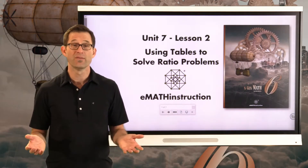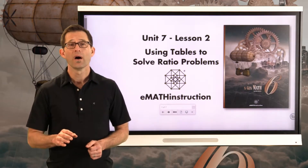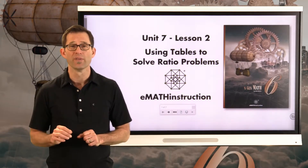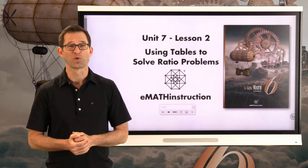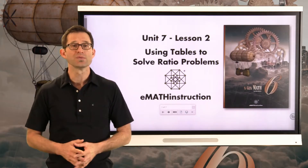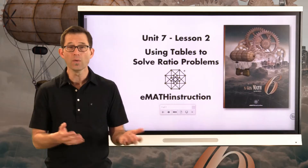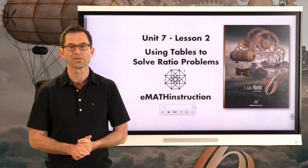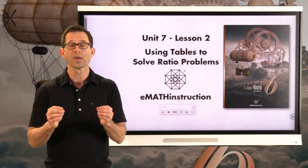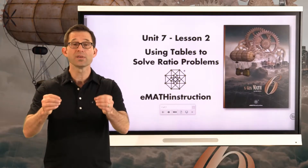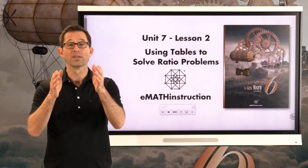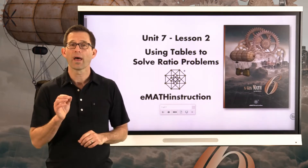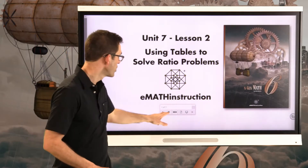In the last lesson we used some tables to solve ratio problems. A ratio is just a comparison between two quantities — for every blank number of these things you have to have blank number of these things. Like imagine taking a class trip where for every seven students that go on the trip you need two adults. If 14 kids go, you need four adults; if 21 kids go, you need six adults. Ratios are comparisons of two quantities that you can scale up using multiplication or down using division.